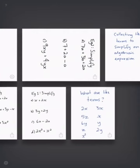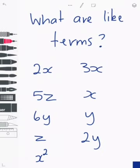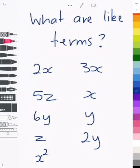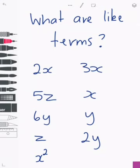So let's go straight into it and discuss what are like terms. Now like terms are terms that have the same pronumeral. For example, here I have a number of different terms. I have 2x, 3x, 5z, x, 6y, y, z, 2y, and x squared.